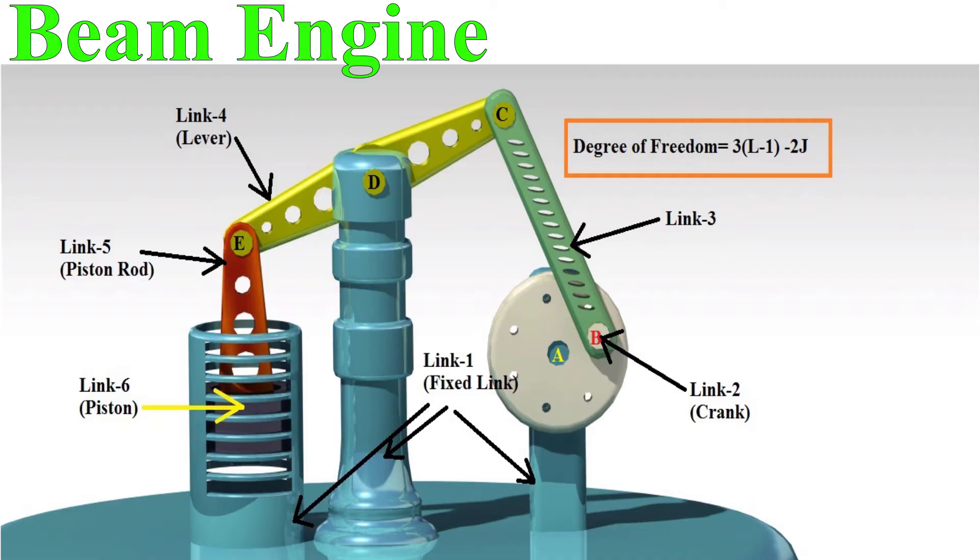Link 1 is the fixed link. Link 2 is the crank, which gives input to the mechanism. Link 3 connects from the crank to the lever. Link 4 is the lever. Link 5 is the piston rod. Link 6 is the piston.